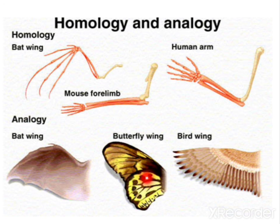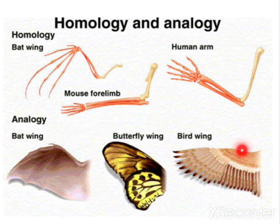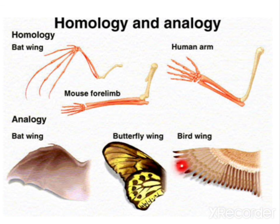Bat's wing, when compared with butterfly wing or bird's wing — if it is compared with butterfly wing, it comes under analogous organ. This entire group is homologous organs, and this group is analogous organs. Children, I hope you understand the differences between homologous and analogous organs. We will meet in the next class.